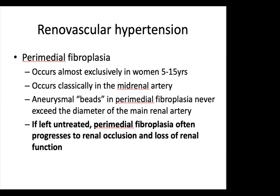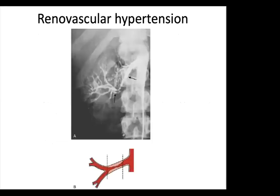Perimedial fibroplasia occurs almost exclusively in women aged 5–15, classically in the mid renal artery. It also has aneurysmal beads, but unlike medial fibroplasia, the beads never exceed the diameter of the main renal artery (small beads). If left untreated, perimedial fibroplasia often progresses to renal occlusion and loss of renal function. On renal arteriogram, it shows tight stenosis in the mid-portion of the renal artery with a small string-of-beads appearance.